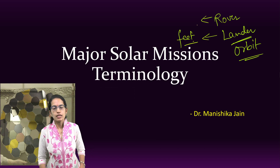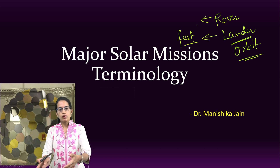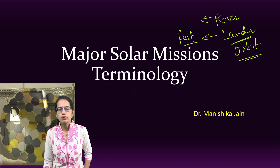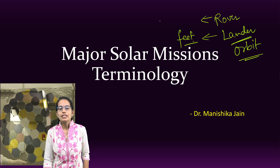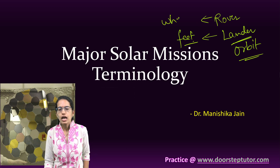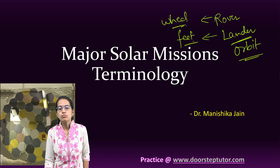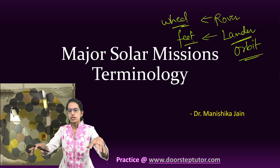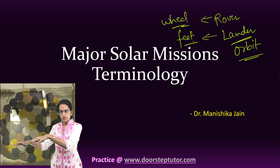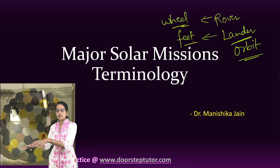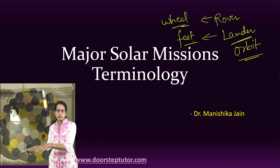A rover, as the name suggests, would rove or move around. It has wheels and it would move on the object where it lands — any astronomical object.